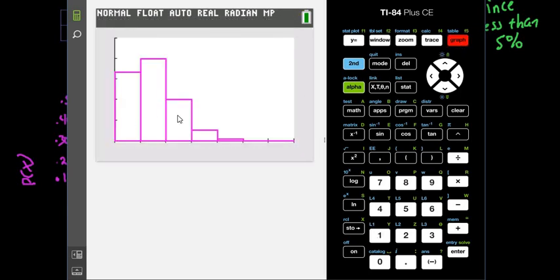Now if we hit graph, it gives us a better representation, and if we hit trace, it'll actually show us that in this one we have 33%, in this one we have the 40%. So this would also give you your probabilities, and you can see how much it shows. It does show you that that's pretty much 0. You can barely see it.